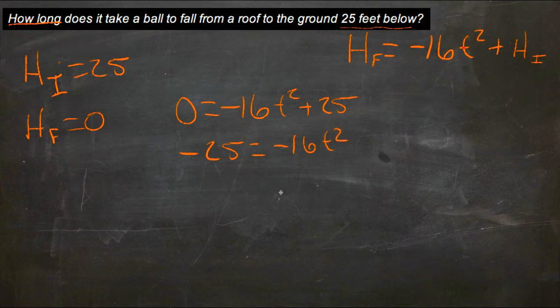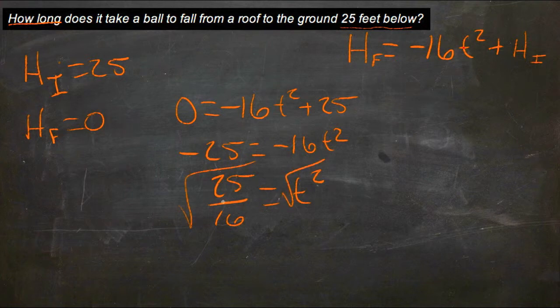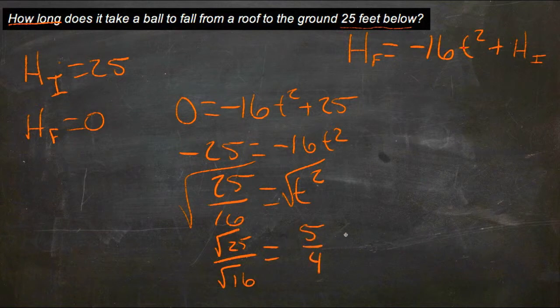Divide both sides by negative 16. We get 25 sixteenths is equal to t squared. Take the square root of both sides. The square root of 25 sixteenths is the same as the square root of 25 over the square root of 16, which is 5 over 4. So that's equal to t.